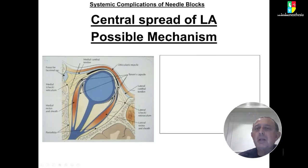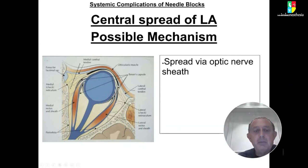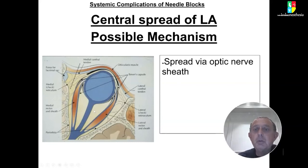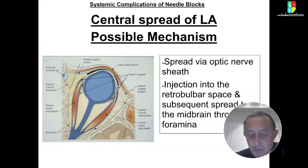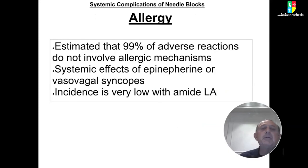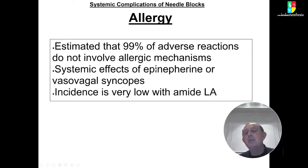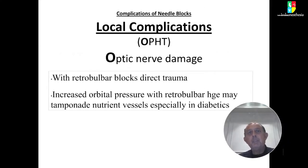A serious systemic complication is central spread of local anesthetic: when local anesthetic is injected intraconeally or into a peribulbar block, it may be absorbed along the optic nerve sheath and spread to the subarachnoid space, resulting in total spinal anesthesia. Management involves intubating the patient and ventilating for about four to six hours while reassuring the family — it is not life-threatening if recognized promptly. Regarding allergy, approximately 99 percent of adverse reactions do not involve true allergic mechanisms; they are systemic effects of epinephrine or vasovagal responses. The true incidence is very low, especially with the amide local anesthetics currently in use.